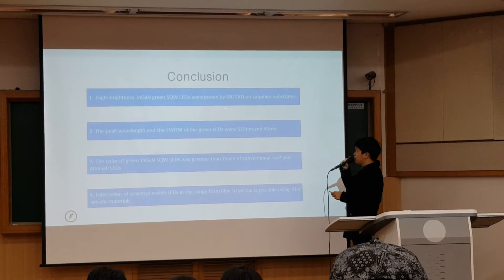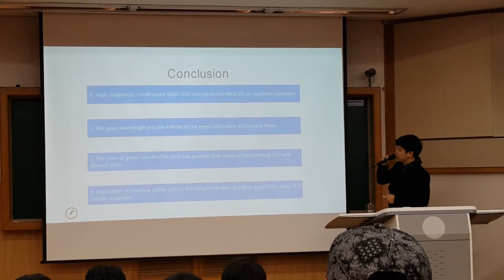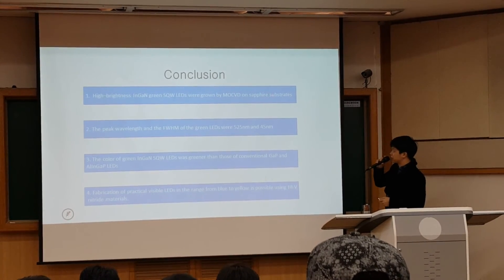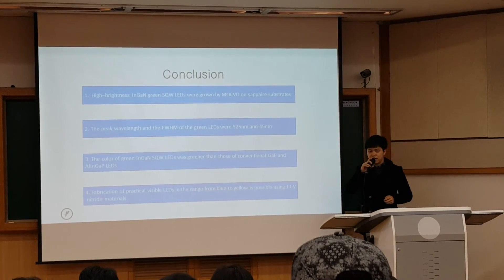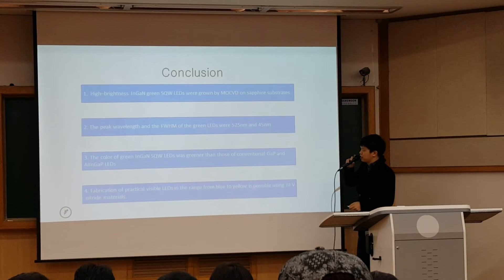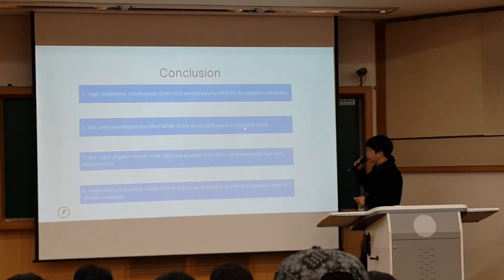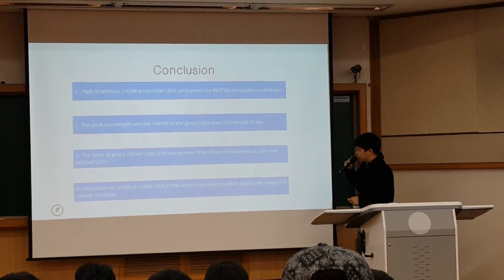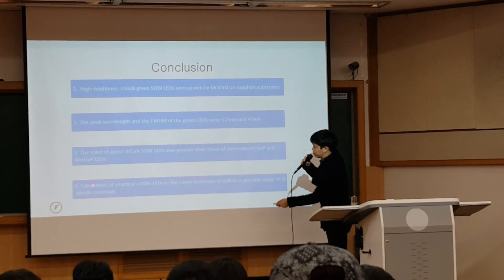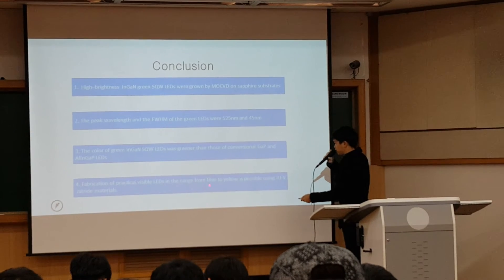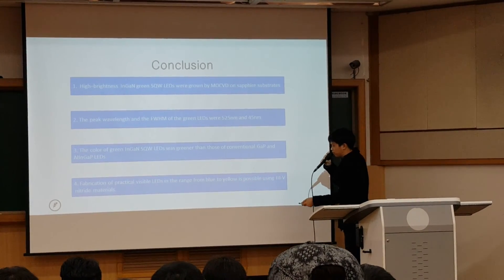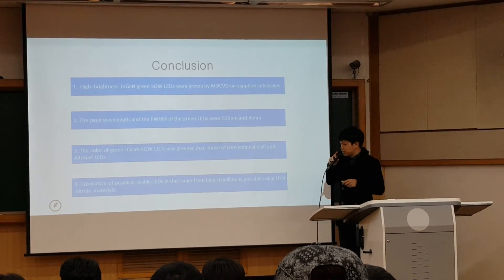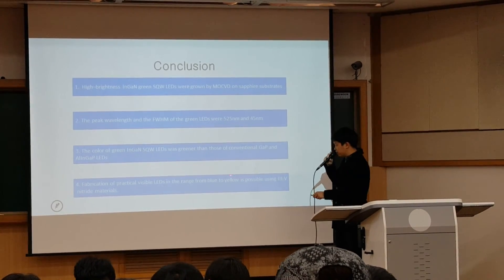This is the conclusion. First, high-brightness Indium gallium nitride single quantum well LEDs were grown by Metal-Organic Chemical Vapor Deposition on a sapphire substrate. Through MOCVD we can make a single quantum well structure. Points 2 and 3 cover experimental data and comparison between the two diode types. Point 4 is about fabrication: practical visible LEDs in the range from blue to yellow are possible using InGaN nitride materials, meaning we can change LED color through changing the Indium fraction.